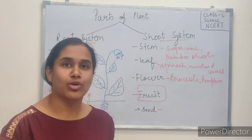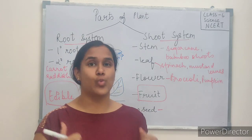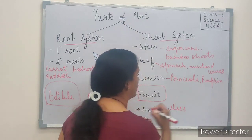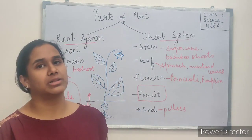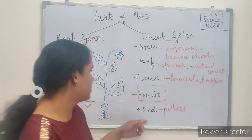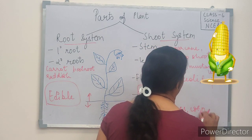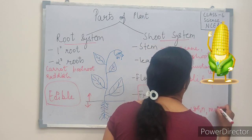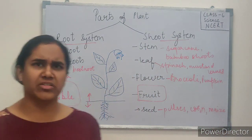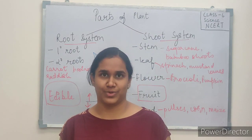Pulses are a very important part of our diet, especially for vegetarians, because they are very rich in proteins. Majority of the pulses — I would say all the pulses — are seeds. Corn, maize, and other grains like rice and wheat are also seeds.